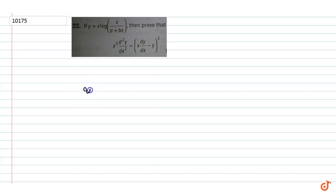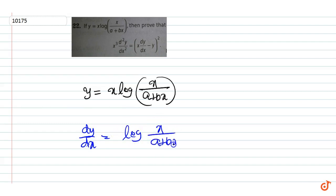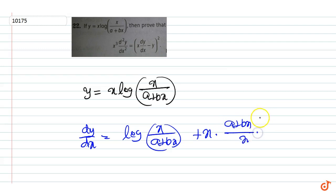Here we have y is equal to x log(x plus a) plus bx. Now, differentiating we get dy by dx is equal to log(x plus a) plus bx, plus x into the differential coefficient of that function, that is (a plus bx) upon x into (a plus bx) minus x into b by (a plus bx) the whole square.